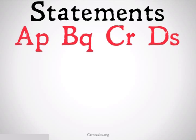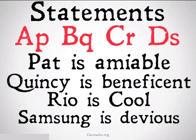If they're paired with an object, we're going to call them a statement. These statements look something like Pat is amiable, that would be AP. Quincy is beneficent, Rio is cool, or Samsung is devious. Statements always take the form of the capital letter, the predicate coming first, and the subject, the lowercase letter, coming second. You're not going to have a statement if you have a variable involved.